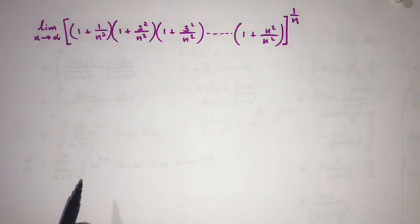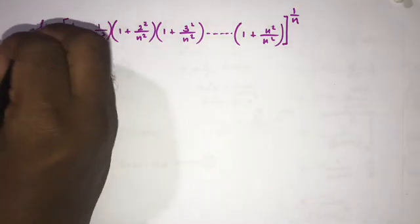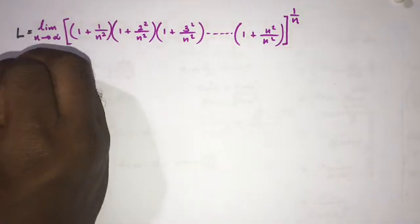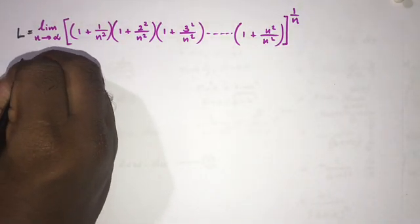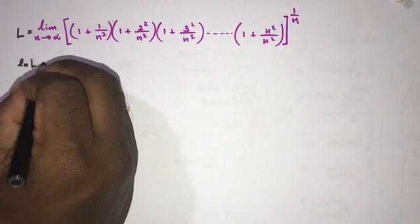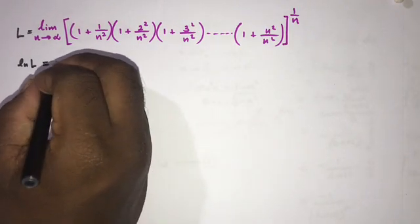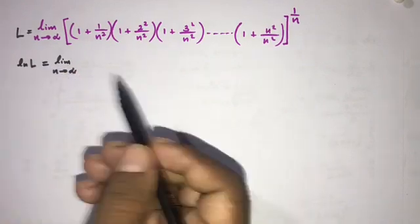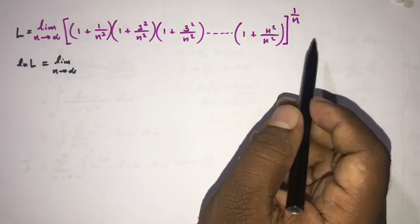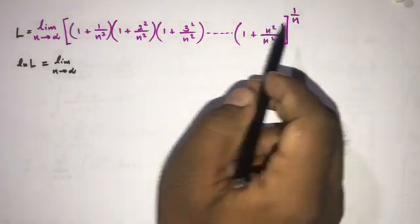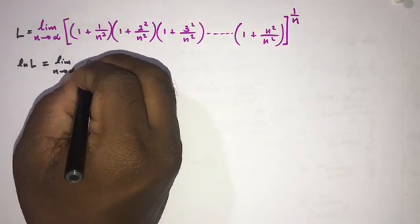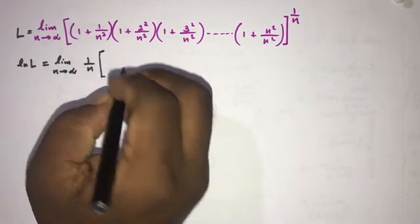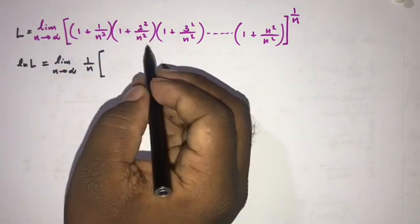How to begin: first we set this expression equal to L, and now if we take the natural log of both sides, natural log of L is equal to the limit as n approaches infinity. According to the property of natural log, we can bring the 1/n exponent out as a factor 1/n.